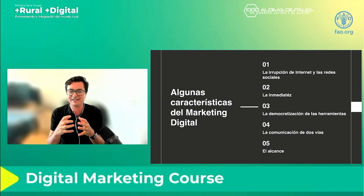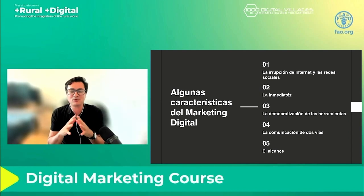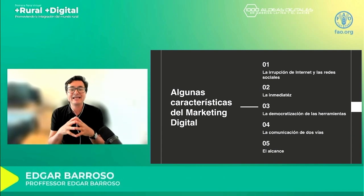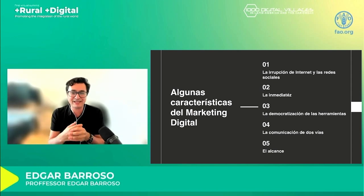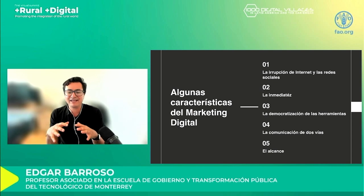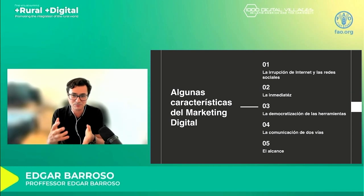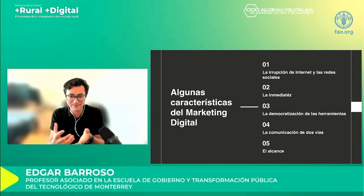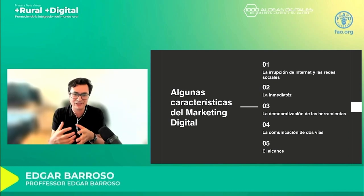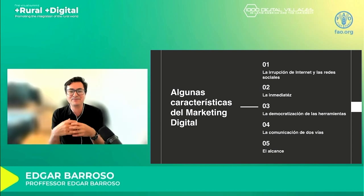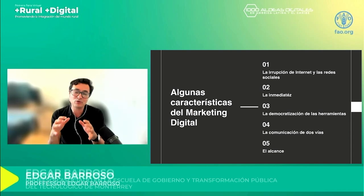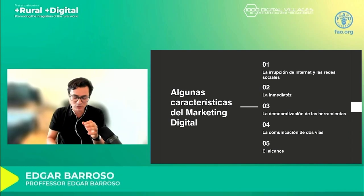What are the main characteristics of digital marketing? On one hand we have internet and social networks. Statistics from the Mexico Internet Association say that 99% of people have Facebook installed on their smartphones. The second most used application is WhatsApp, among others — maybe you have YouTube, Instagram, Twitter, etc. I think it's important to understand the great opportunity we have in the digital world.